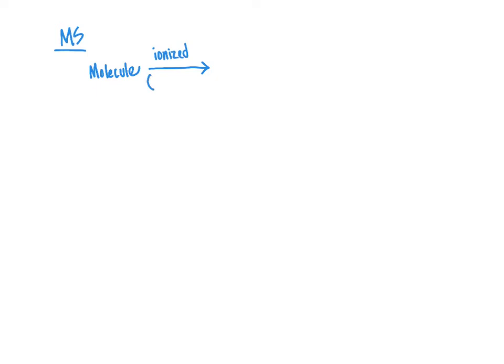By definition, when we form an ion out of something, the molecule is going to gain either a positive or a negative formal charge, abbreviated FC. We would call that positive ionization mode or negative ionization mode.